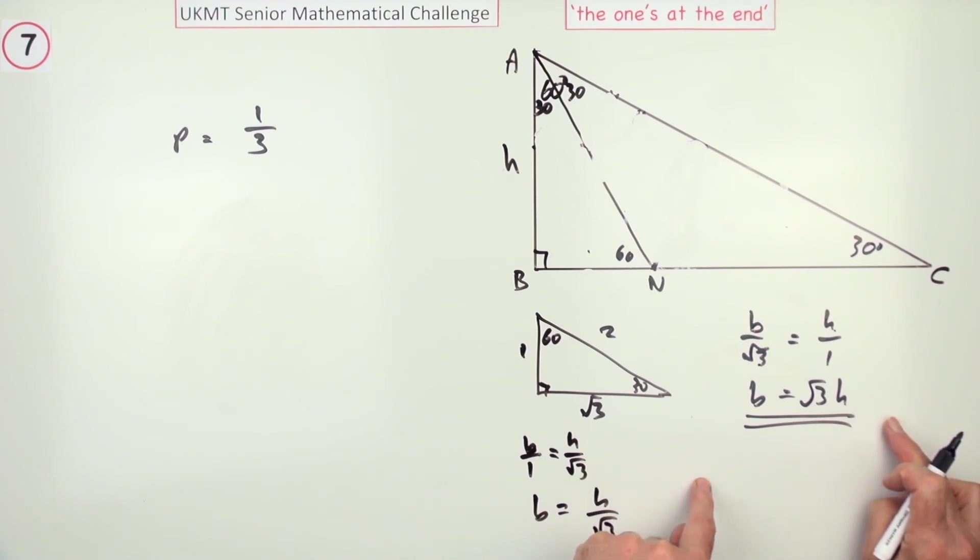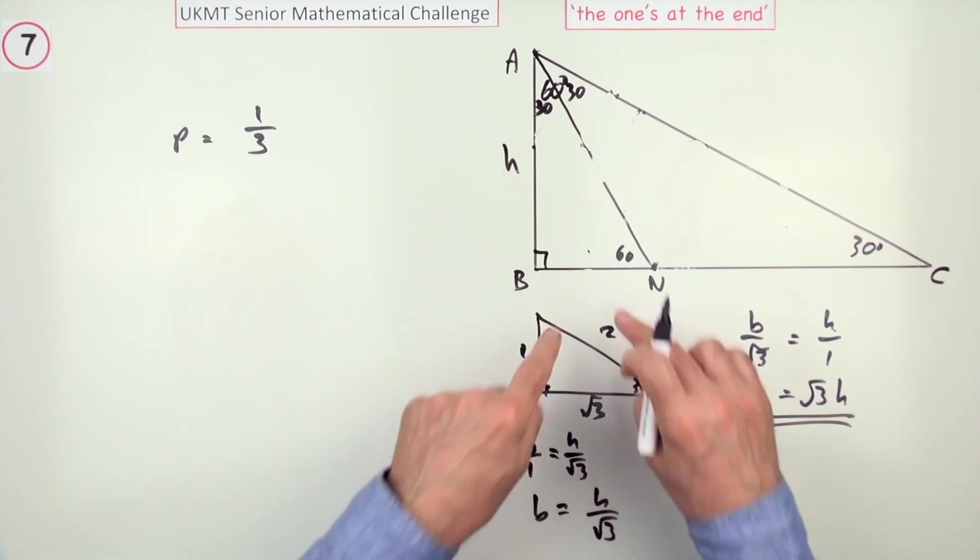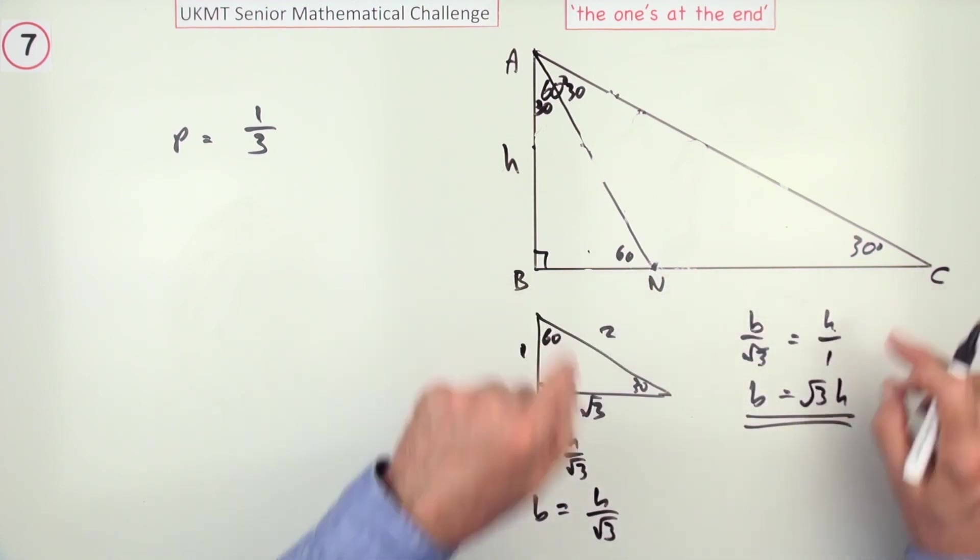Now, when you work out the areas, the area is a half base times height, or the base times a half height. Here again, it's the base times a half height. So, the fraction will just be this base divided by the whole base.